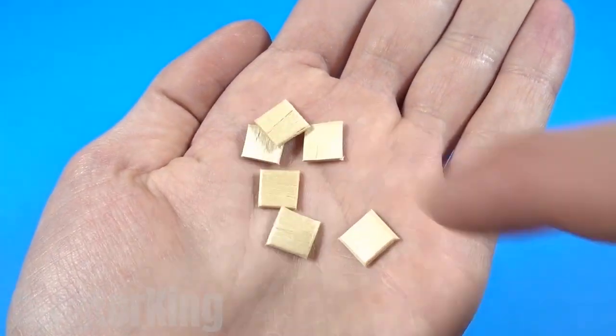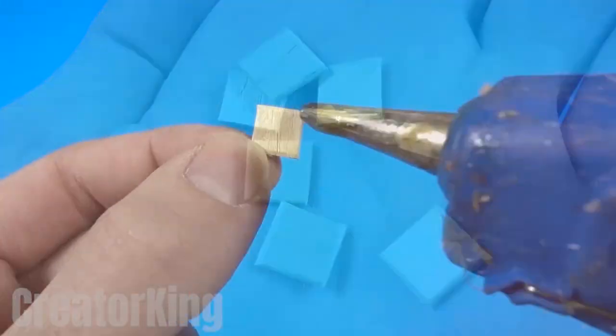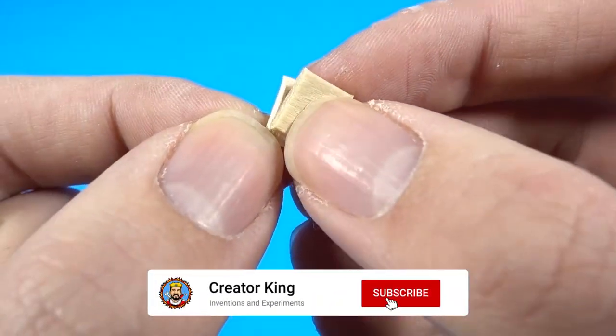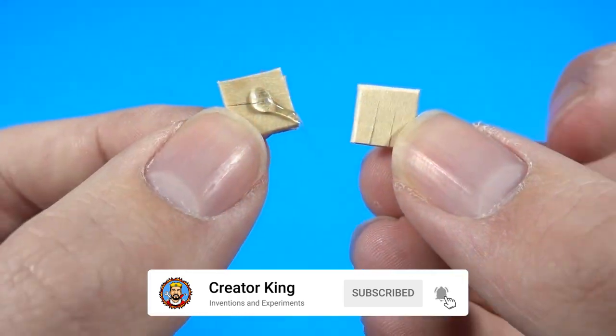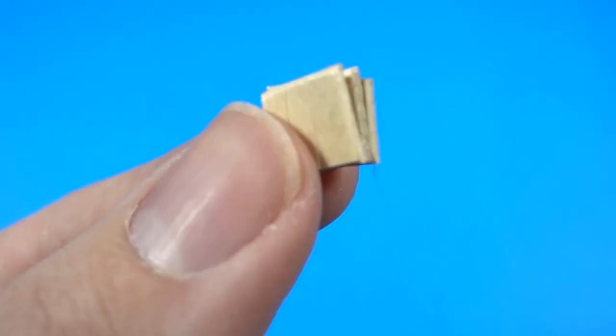Once we have six of them, glue them one on top of the other until you have two piles of three pieces each, which we'll attach to a pair of school scissors, those with the rounded tip so you don't get hurt.